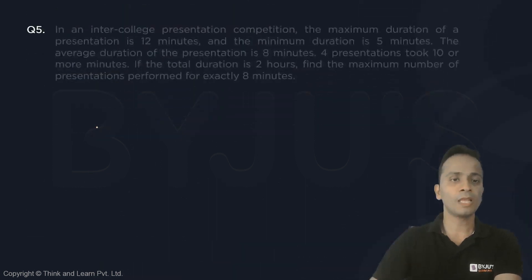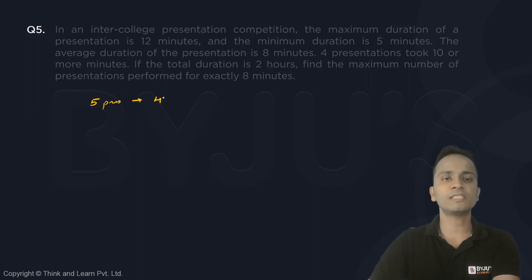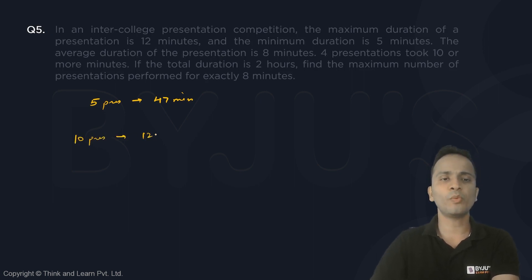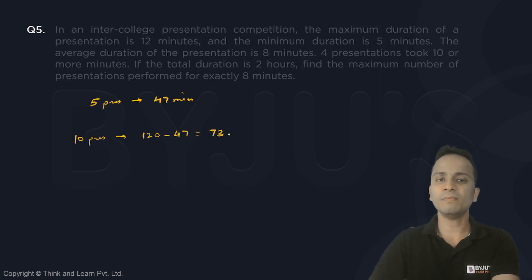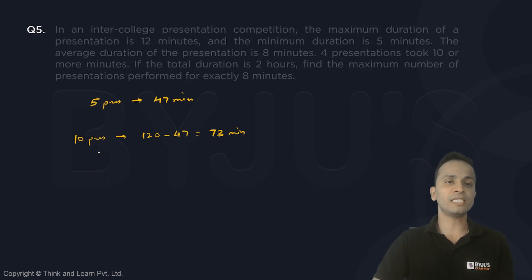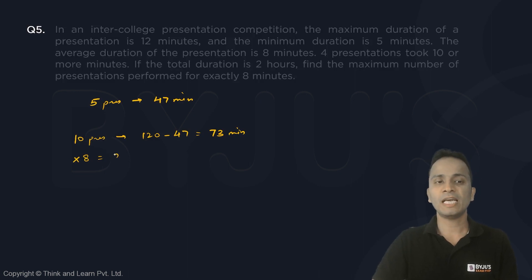For five presentations I have consumed 47 minutes. Total duration was 120 minutes, so for the remaining 10 presentations I'm left with 120 minus 47, which is 73 minutes. Now if I try all 10 remaining presentations to be exactly 8 minutes to maximize the count, I would require 80 minutes, but I only have 73.